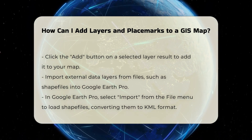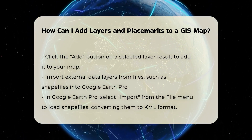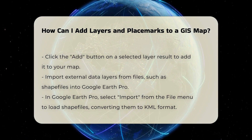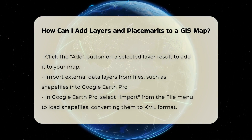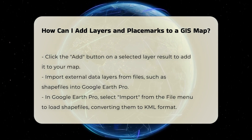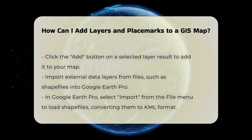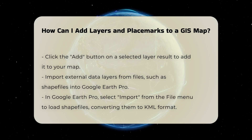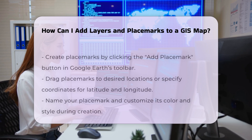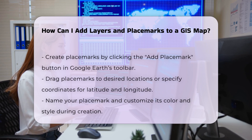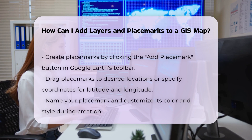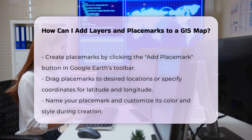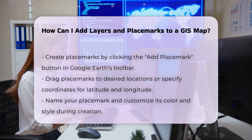Adding Placemarks: To add placemarks, you need to define specific geographic locations on your map. In Google Earth, you can create placemarks by clicking the Add Placemark button in the toolbar. You can either drag the placemark to the desired location or specify the coordinates of latitude and longitude. You will then be prompted to name your placemark and possibly change its color and style.